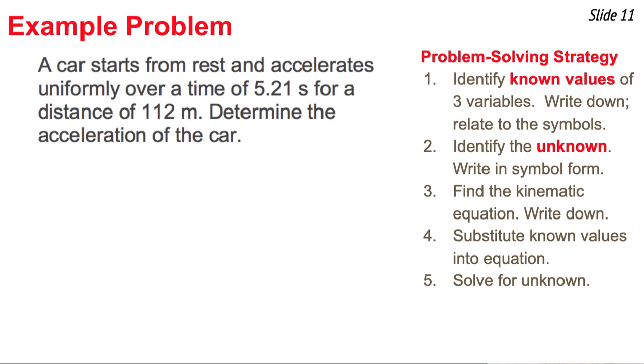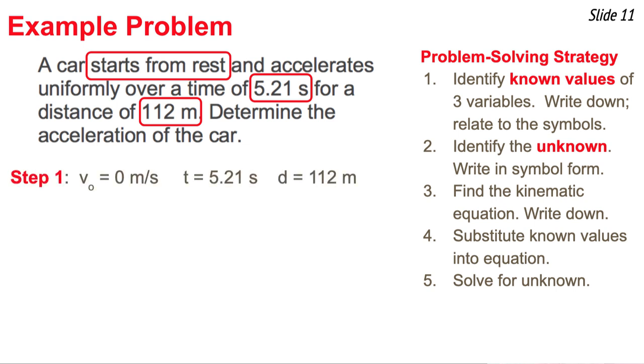So here's our example problem. And what we're going to do is we're going to use the strategy that's listed here on the right side of the slide in order to solve this problem. And the first step of the strategy is to look through the problem and identify three variables whose values are known. So a car starts from rest, and I see that starts from rest, and that's an indicator to me that the original velocity is zero. And it accelerates over a time of 5.21 seconds, so I know the time, and for a distance of 112 meters, so I know a distance. And so what I'm asked to do is to write these things down and equate the values to the actual symbols used in the equation. And you see how I've done this right there. That's step one.